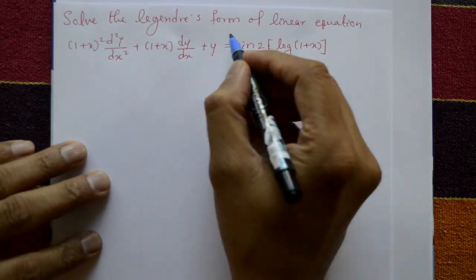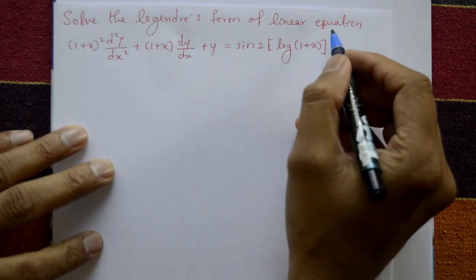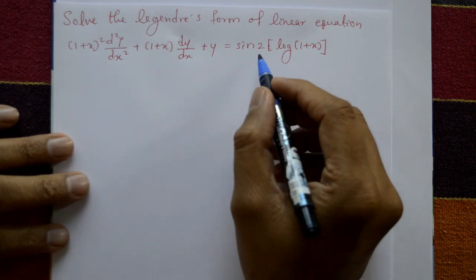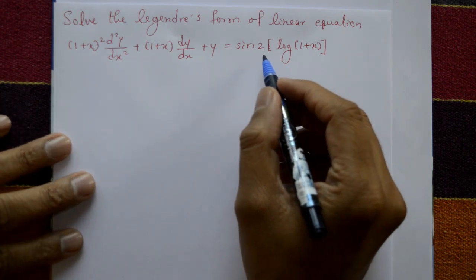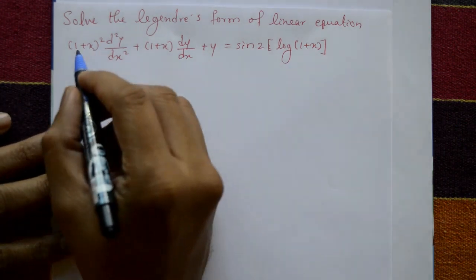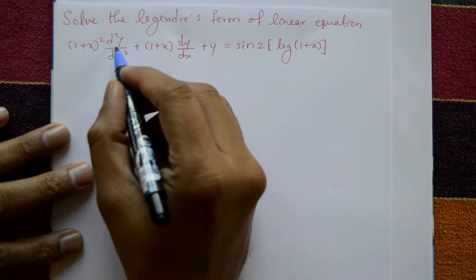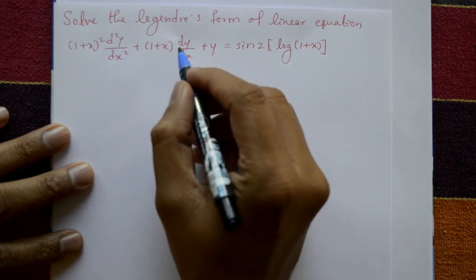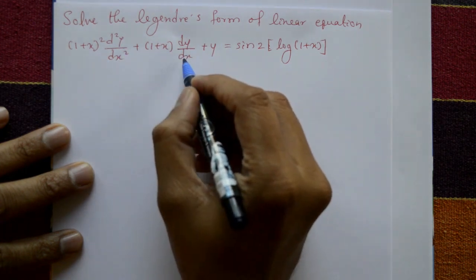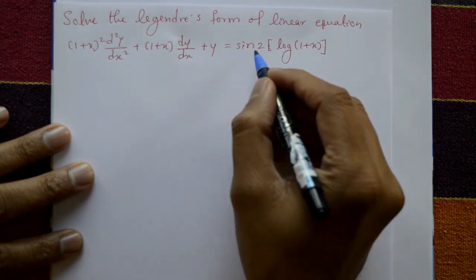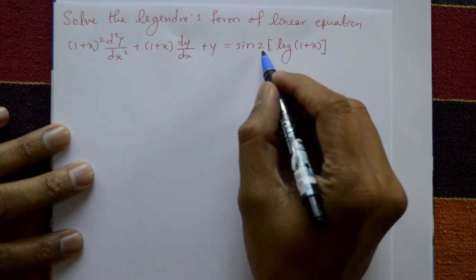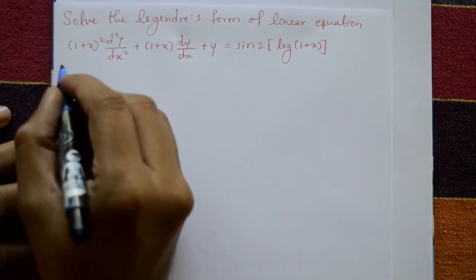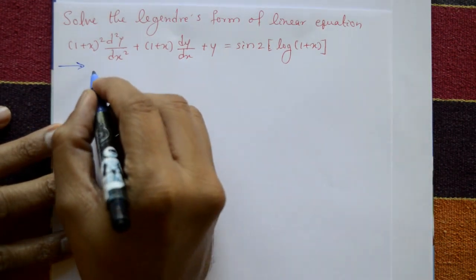Solve the legendary form of linear equation. This is the standard form of the Legendre linear equation: (1 + x)² d²y/dx² + (1 + x) dy/dx + y = sin²[log(1 + x)]. Now find the solution.